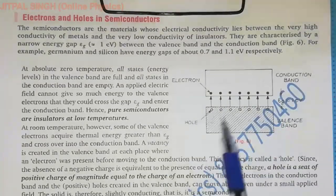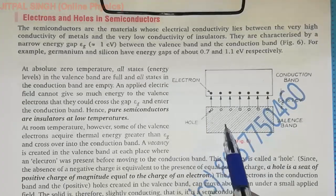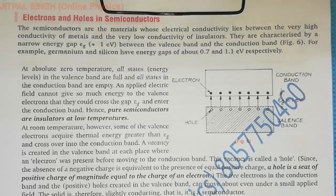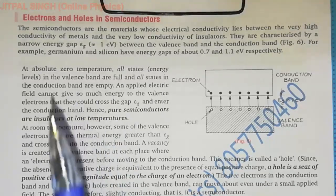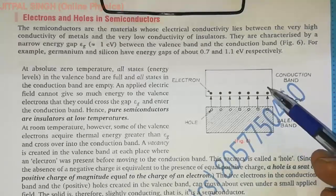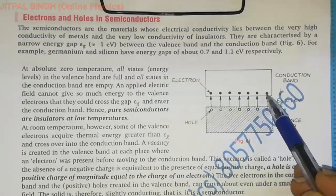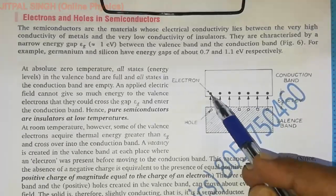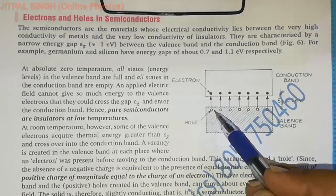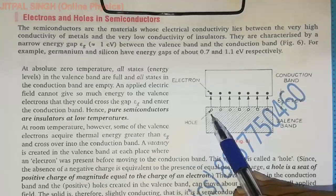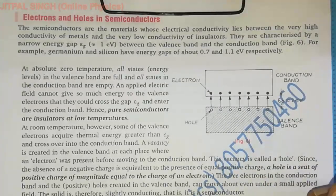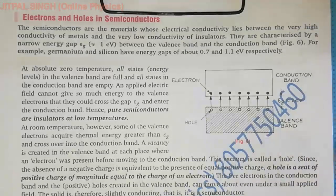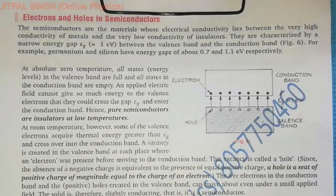As the electron shifts from the valence to the conduction band, it creates a vacancy of positive charge in the valence band — as shown by the black dots and arrows indicating the electron moving from valence to conduction band. The electron, upon breaking the covalent bond, creates a seat of positive charge, and this seat of positive charge is called a hole. A hole is a seat of positive charge having a charge in magnitude equal to the charge on an electron.